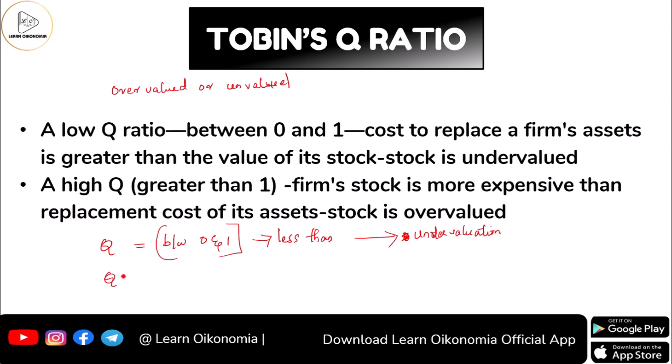Similarly, what happens if the Q value is greater than 1? In that case, it means overvaluation of assets. This is because the stock is more expensive when compared to the replacement cost of the asset. So for that reason, as mentioned earlier, whenever you have the Tobin's Q ratio value, you can have an understanding regarding whether it is overvaluation or undervaluation.